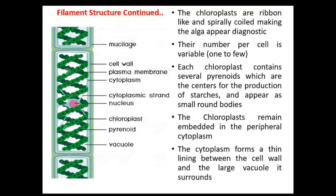Regarding the chloroplasts of Spirogyra: the chloroplasts are ribbon-like and spirally coiled, making the alga appear diagnostic. The number of chloroplasts per cell varies from one to a few. The chloroplast of Spirogyra is characteristic — it is long, ribbon-like, and spirally coiled. Spirogyra is actually named after this spirally coiled chloroplast: 'spiro' means spiral and 'gyra' means coiled, referring to its characteristic spirally coiled chloroplasts.